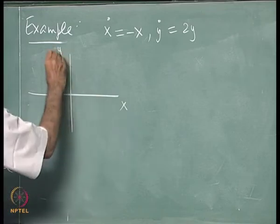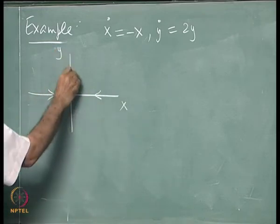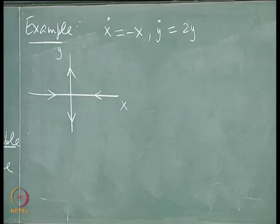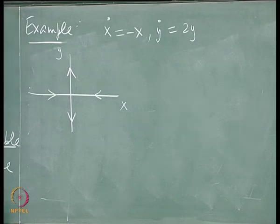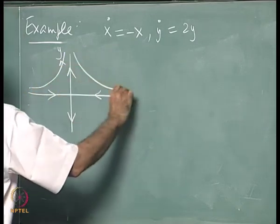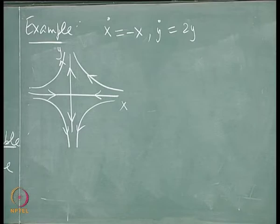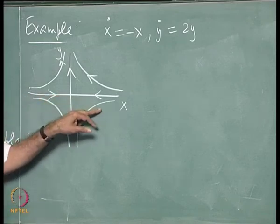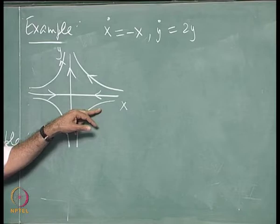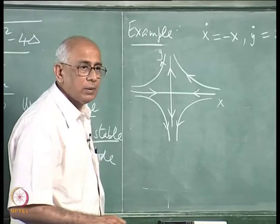On the x-axis the flow is inward; on the y-axis it is outward. Starting with some negative x value, x flows toward 0 but y flows outward, giving trajectories of that characteristic shape. This is an unstable critical point — except for very special initial conditions (starting exactly on the x-axis), trajectories go off to infinity in some direction.